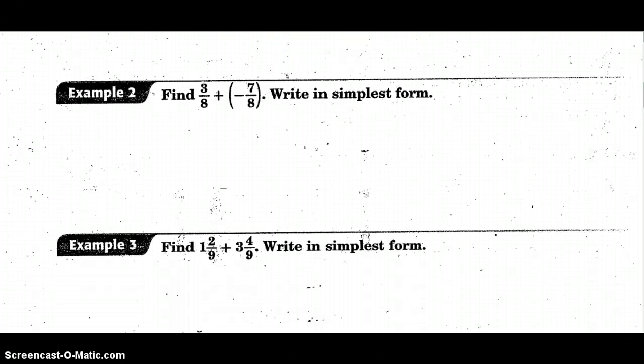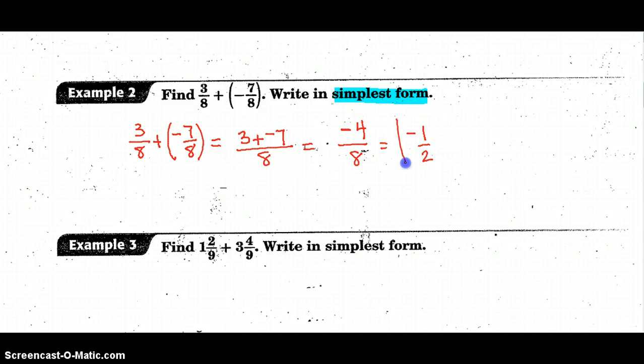In our second example, we have the same denominator again. Practice writing the problem. We're adding a negative. When you have opposite signs, we're going to subtract. We have the common denominator of eight, so in the numerator it's three plus negative seven. We need to subtract three from seven and keep the sign of negative seven, because seven has a greater absolute value than three. So it's negative four over eight, which simplifies to negative one-half.